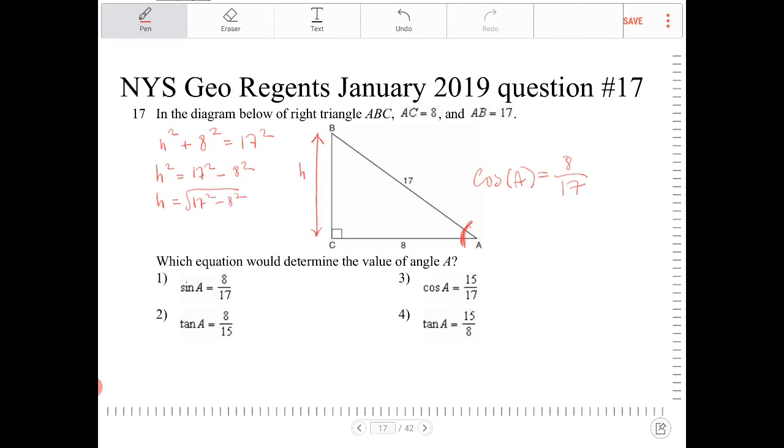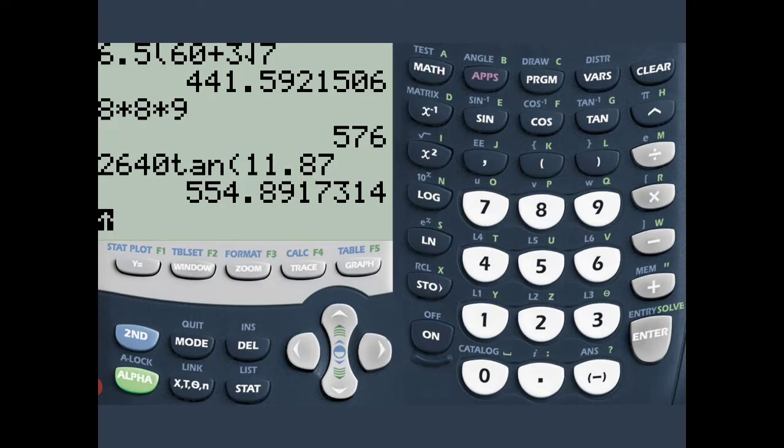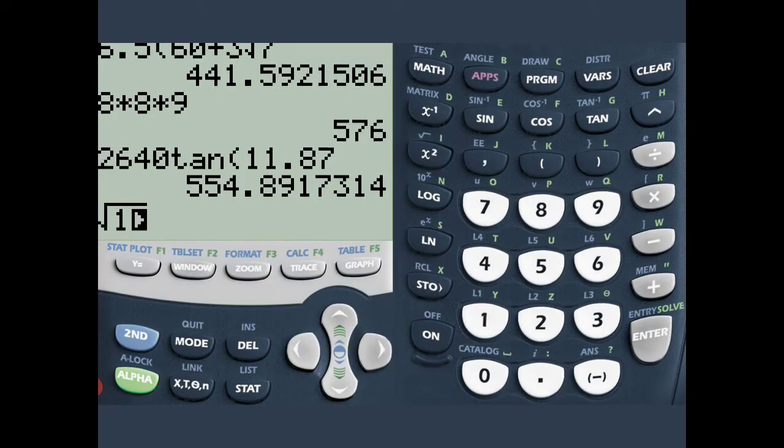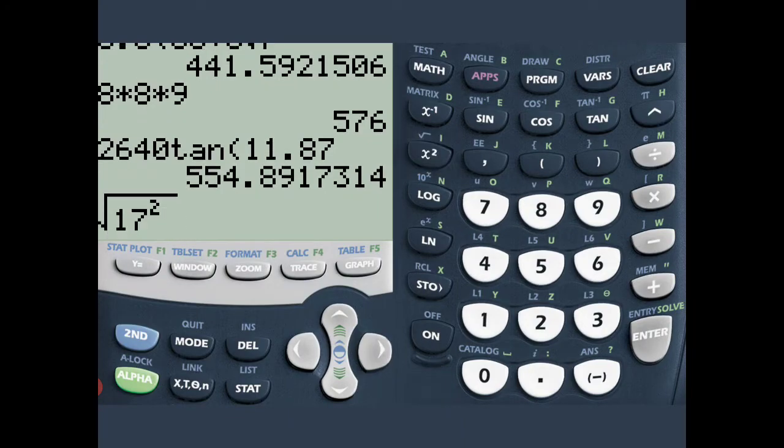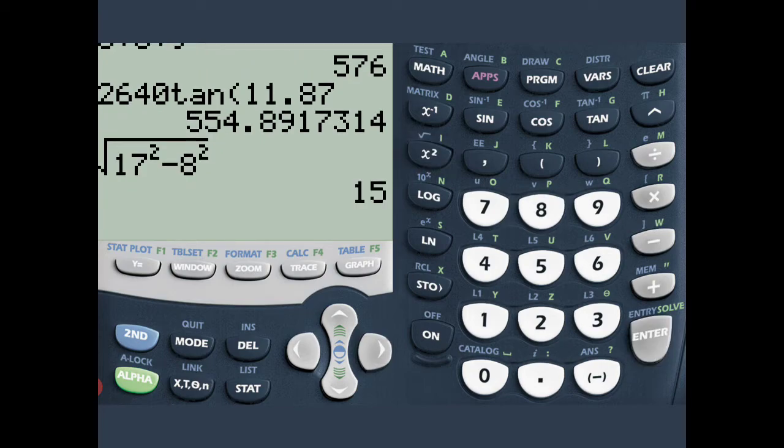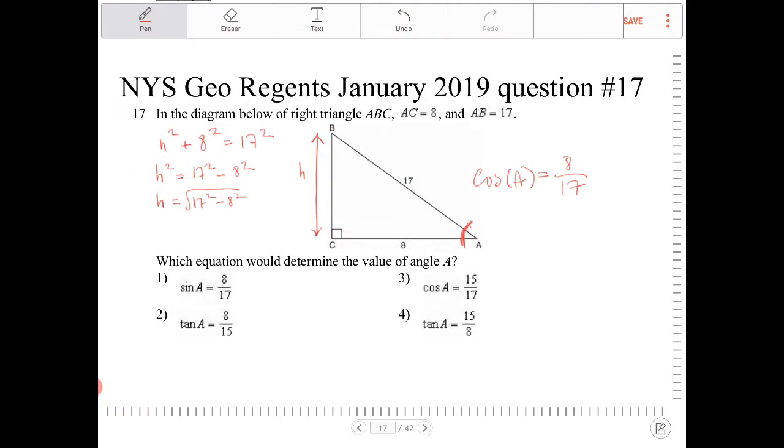And if you didn't recognize this before, this is actually a Pythagorean triple, but that is okay. Anytime that you don't recognize something, it is always good to go through it. So I'm going to get 15. So H is equal to 15.